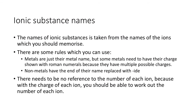So ionic substance names are taken from the names of the ions, which you should memorize. Don't forget the Roman numerals — it's generally for metals in the transition metal range. There doesn't need to be a reference to the number of each ion, because you should be able to work it out from the charges.